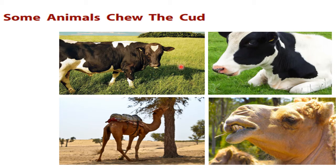When they relax, they bring back part of the food from inside into their mouth and chew it properly. That is why you always see cow and buffalo chewing. This is called chewing the cud. These animals have very strong and broad back teeth which help them to chew. If you see the teeth of buffalo, cow, and camel, they have strong and broad back teeth to help them chew their food.